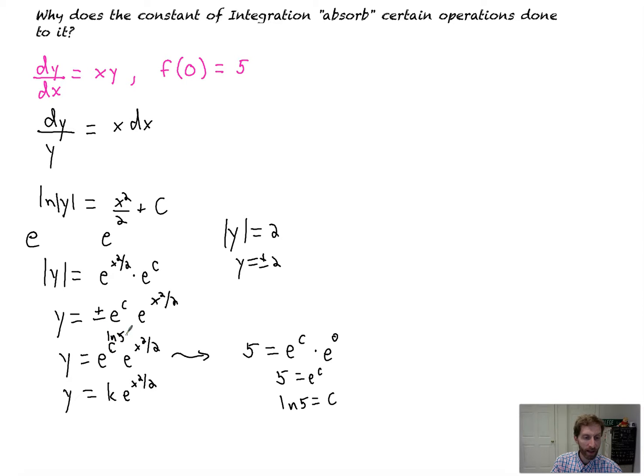So you end up with e to the ln 5. You're taking the ln of both sides only to then exponentiate it anyway. You undo what's been done. And that's why it just remains the constant. And you technically could just leave it as c. I called it K.